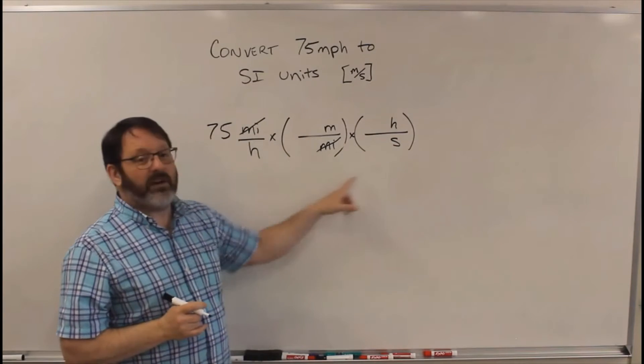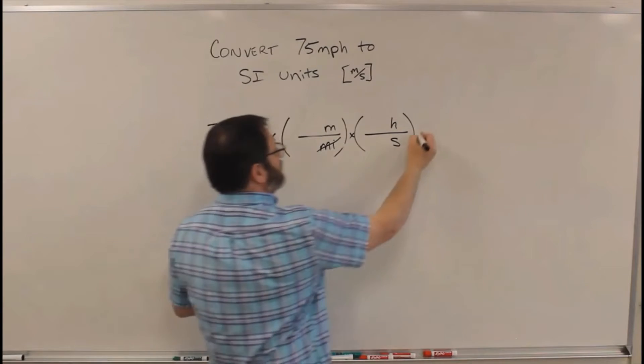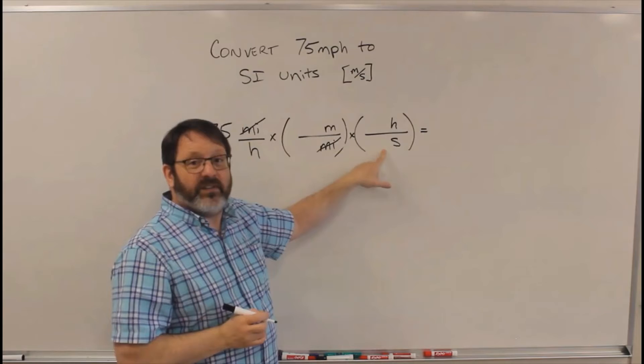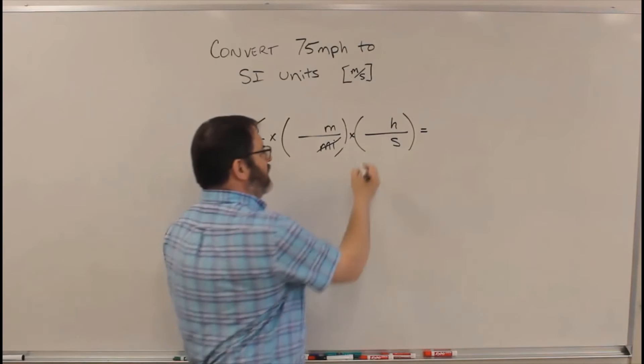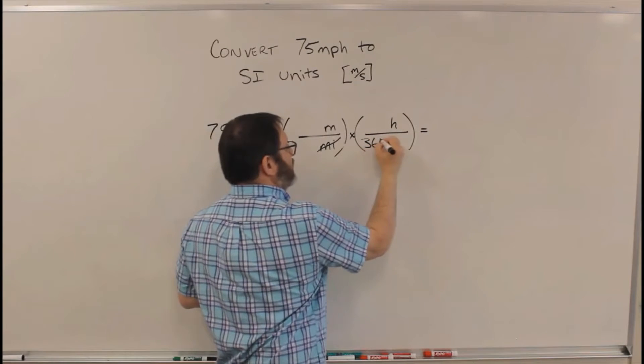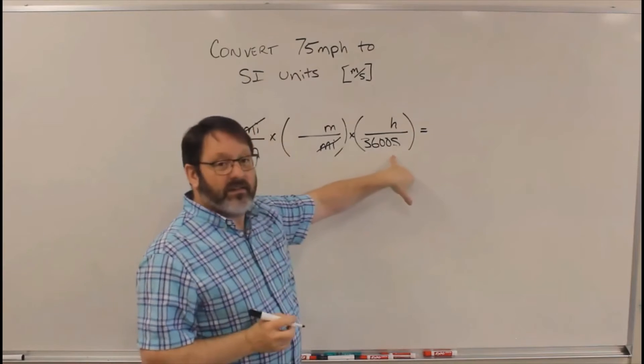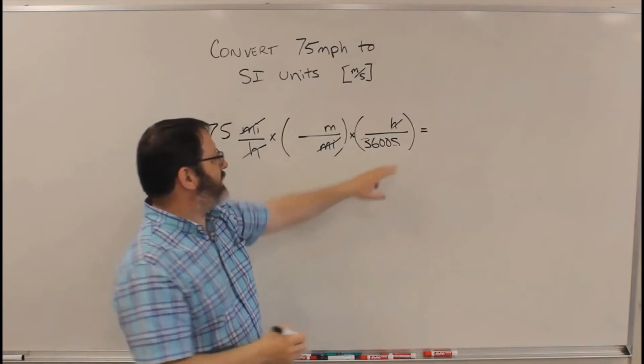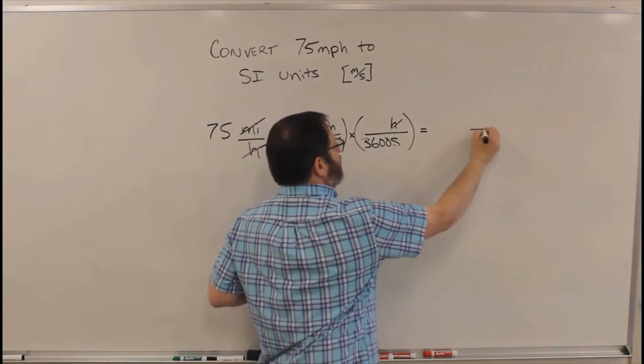So I need to figure out what numbers to put in here to be able to solve this question. I happen to know that there are 3,600 seconds per hour. So I'm going to put that here, 3,600 seconds per hour. So now my hours have canceled. I've got seconds on the bottom. So that's fine.